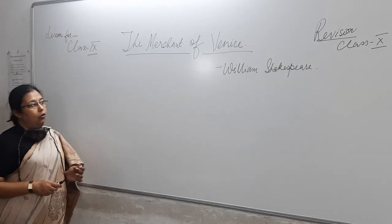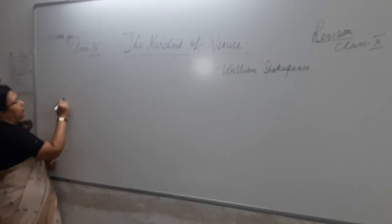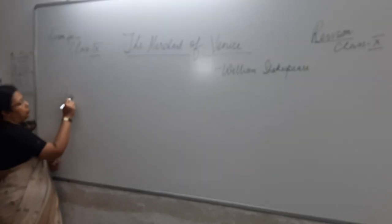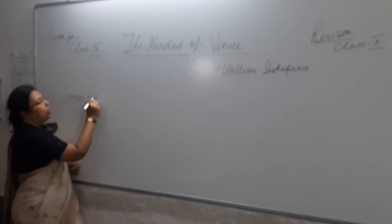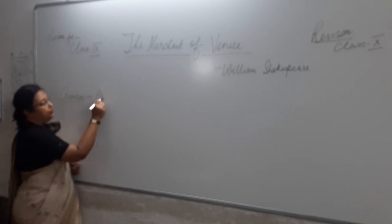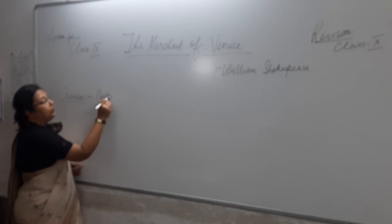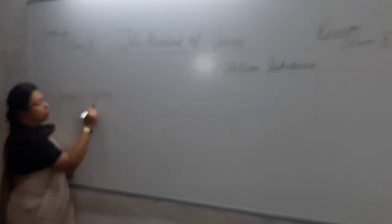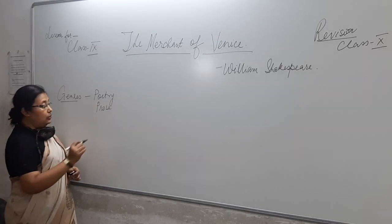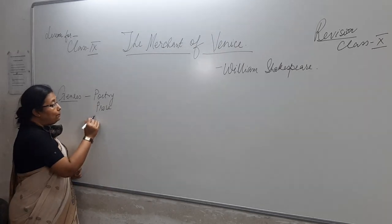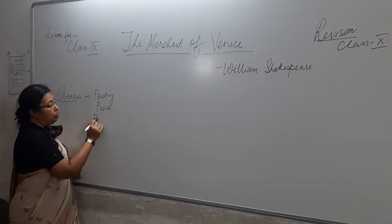Now you have studied all genres of literature. Genres of literature means kinds of literature that you have studied. You have studied poetry, you have studied prose, that is a short story.